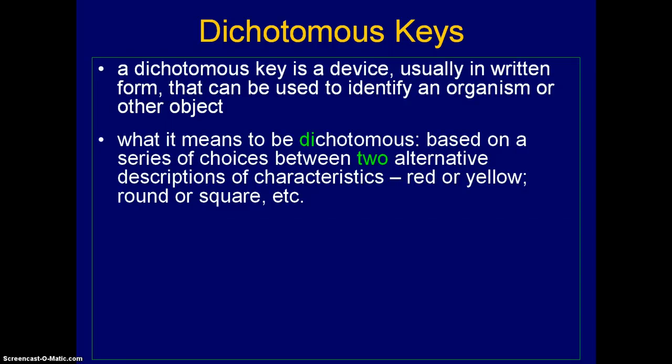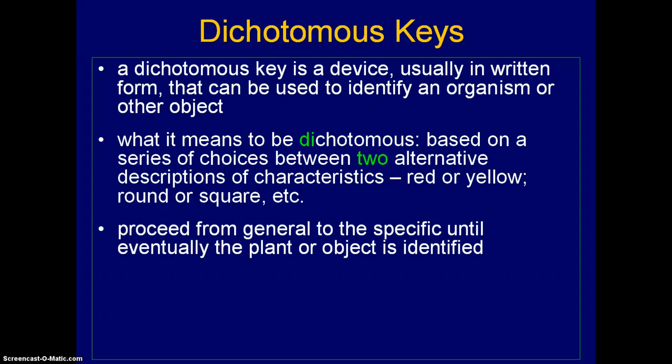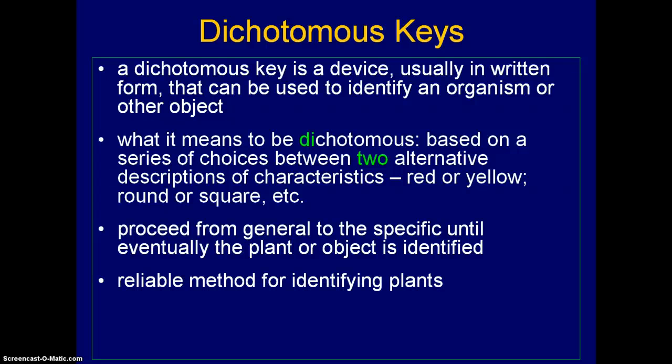The choices can be something simple like color choices — is it red or is it yellow? Is it round or is it square? You make your choice and then you move down that pathway. You tend to proceed from more general characteristics to more specific and detailed characteristics until eventually you've identified your object, your plant, or whatever you have. In the case of plants, it's probably the only reliable method for identifying them, so it's important to understand how they work and how they're made.